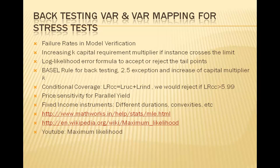N divided by T is the failure rate. For example, at a 97.5% confidence interval, 2.5% of 255 days gives 6.375 days. We then calculated the LR and found we could not reject the model if exceptions are between 2 and 12. If it goes beyond 2 and 12, something is wrong with the model — this is the statistical basis of QPAC.